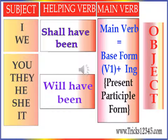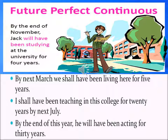Please note that with the subjects I or we, we use 'shall have been'. With the subjects you, they, he, she, it, we use 'will have been'. For example: 'By the end of November, Jack will have been studying at the university for four years.' 'By next March, we shall have been living here for five years.' 'I shall have been teaching in this college for 20 years by next July.' 'By the end of this year, he will have been acting for 30 years.'